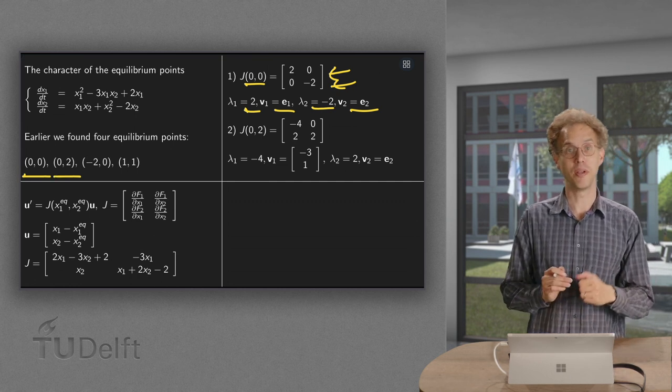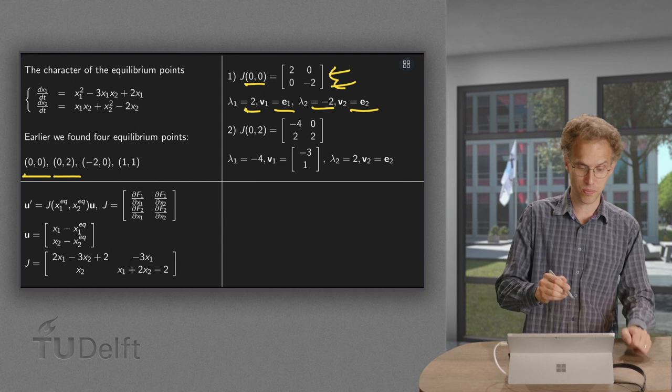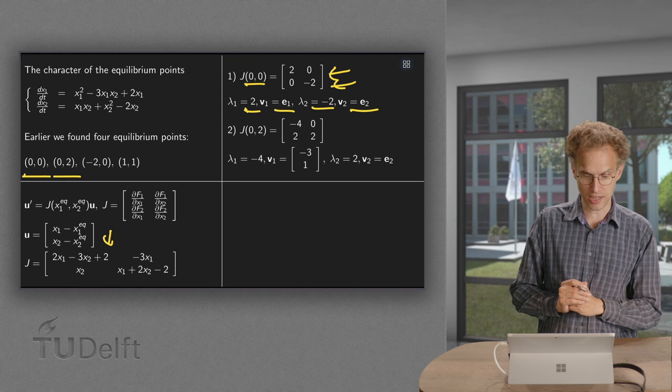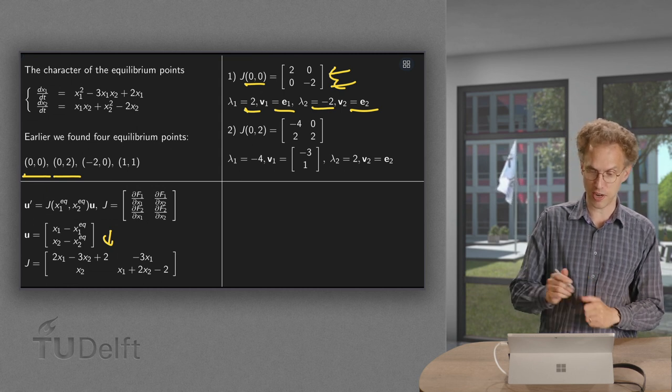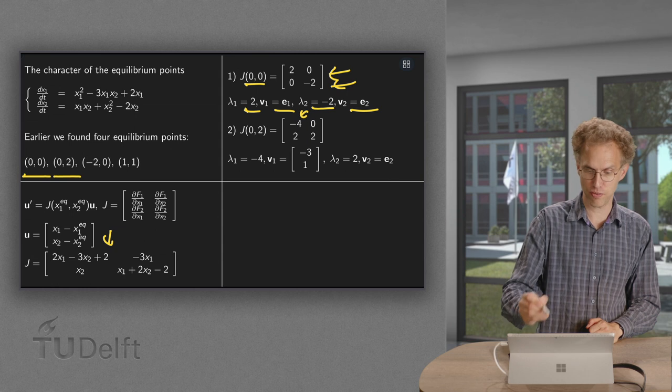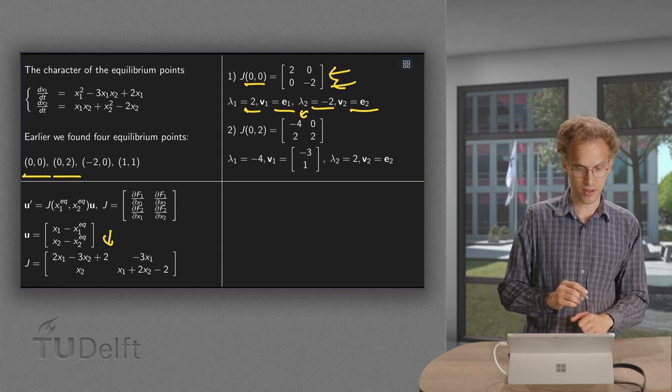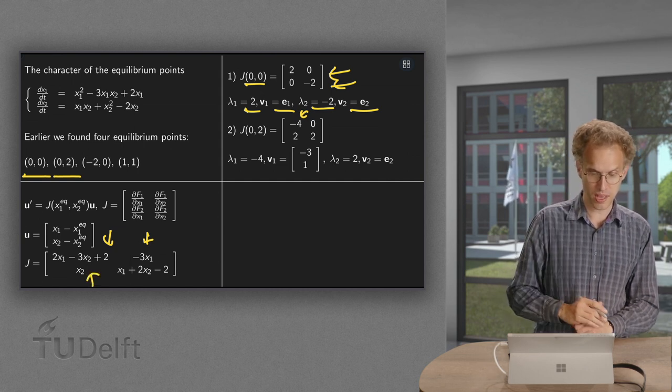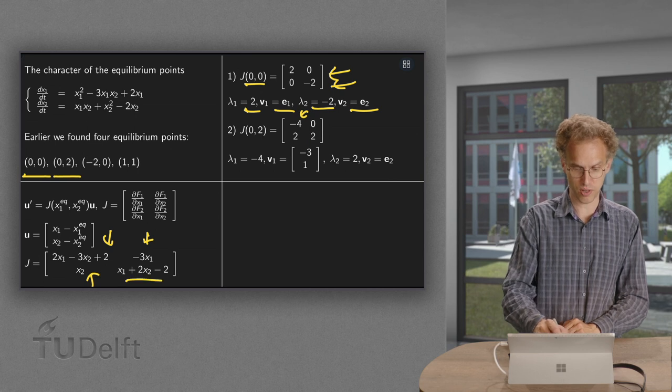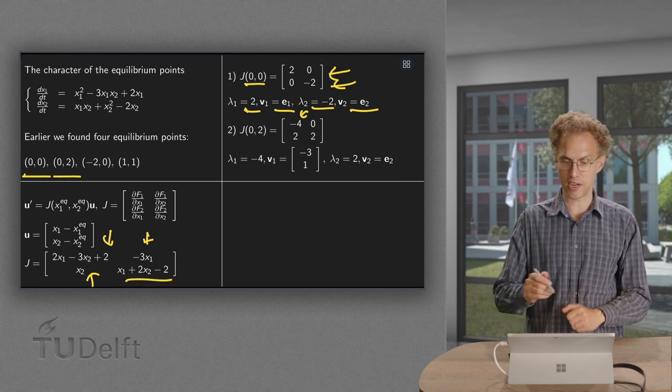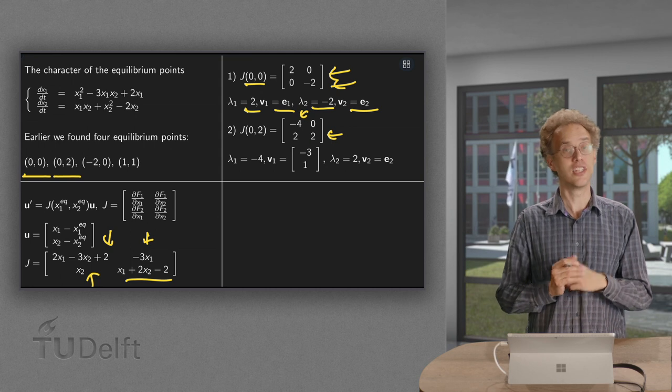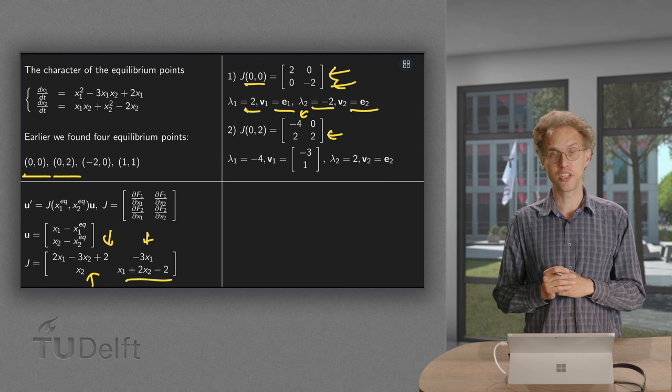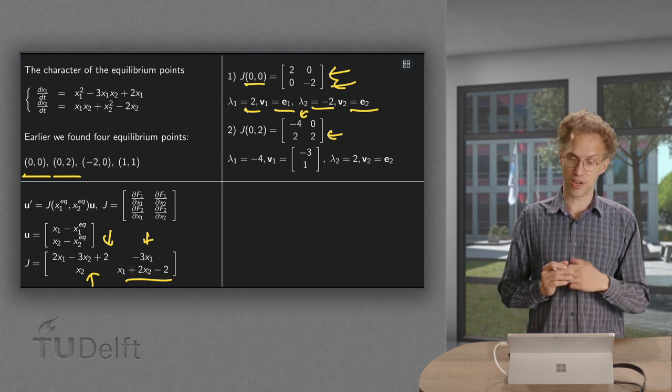So we plug in in the Jacobian x1 equals 0, x2 equals 2. You get 2 times 0 minus 3 times 2 equals -6 plus 2 equals -4. So there you have the -4. And then x1 equals 0, so this one equals 0. x2 equals 2, so this one becomes 2. And then x1 equals 0 and x2 equals 2 gives 0 plus 4 minus 2 gives a 2 over here.